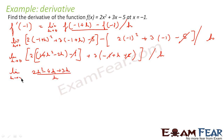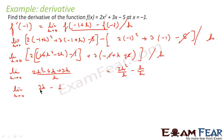So this becomes the limit as h tends to 0 of 2h minus 1. Putting h=0, this comes out to be −1. So f'(−1) = −1. That is the value of the derivative of this function at x=−1.